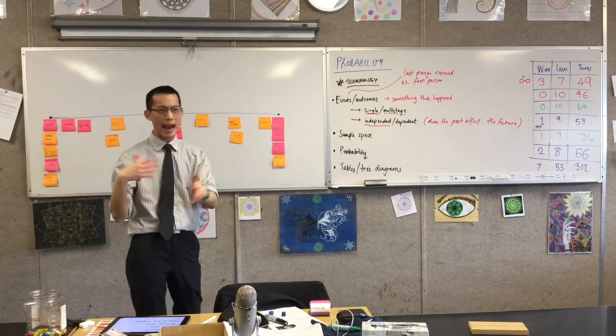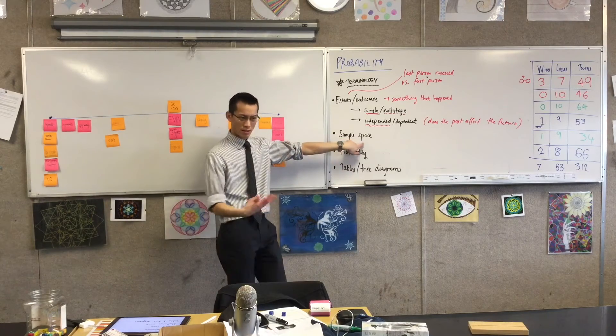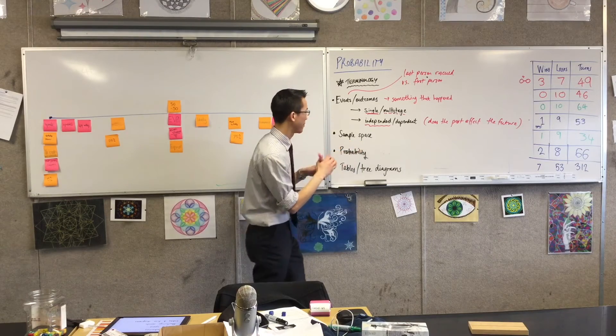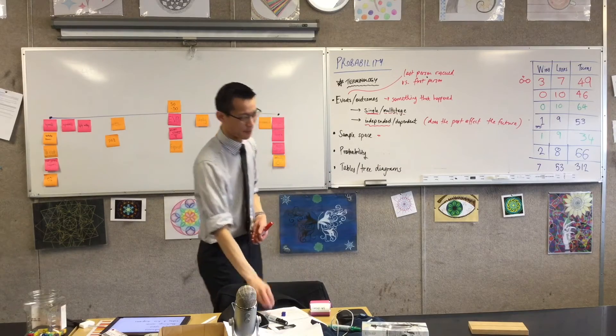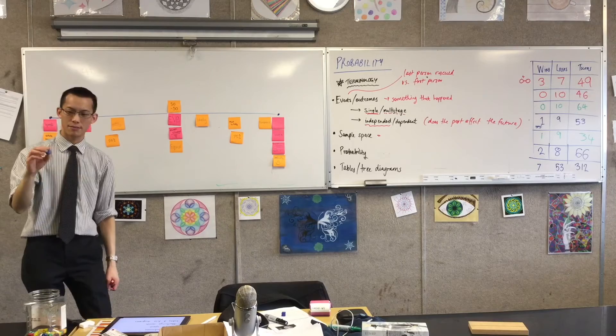Let's keep moving through. We kept on saying "out of six, out of six, out of six" - this is what we refer to as sample space. Can someone describe what sample space is? The size of the sample space for a die is six.